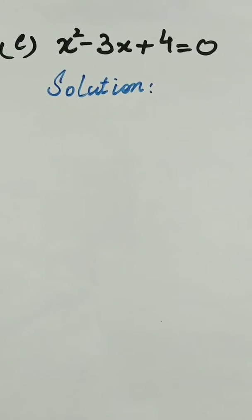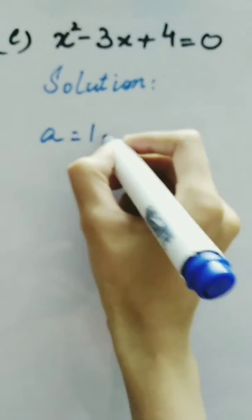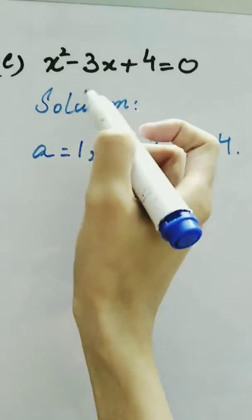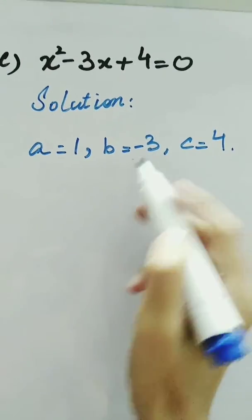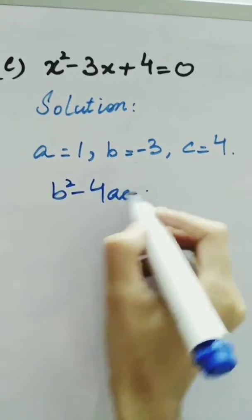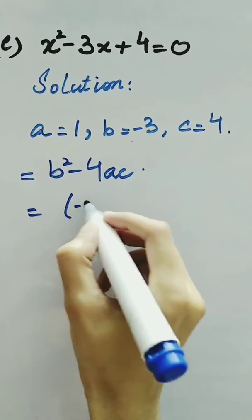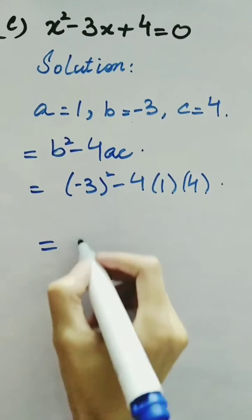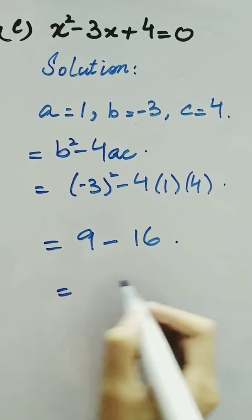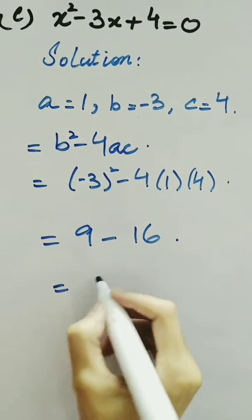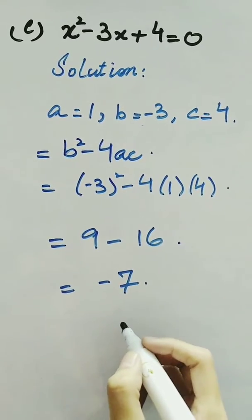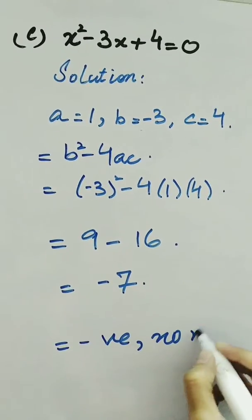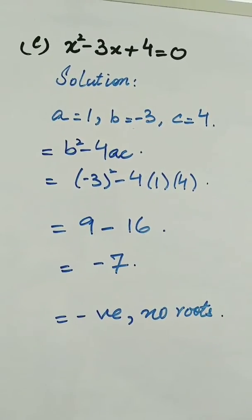Here we have another question: x squared minus 3x plus 4. The value of a is 1, b is minus 3, and c is 4. Always take care of the sign — we are taking b as minus 3. The expression we need to evaluate is b squared minus 4ac. So we have minus 3 squared minus 4 times 1 times 4, which gives 9 minus 16, and it becomes minus 7. Since the value of the expression b squared minus 4ac is negative, we can say that there are no roots or no solution for this equation.